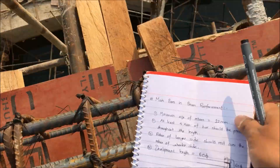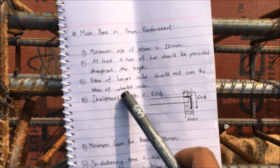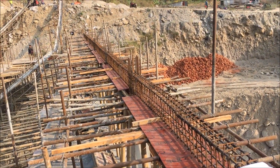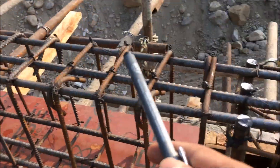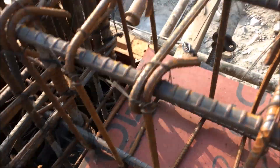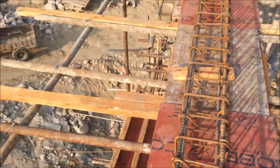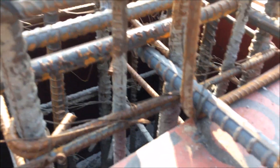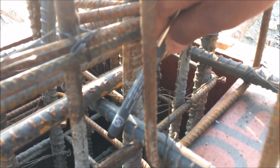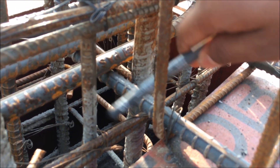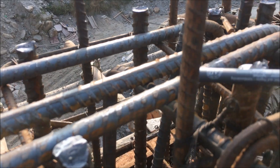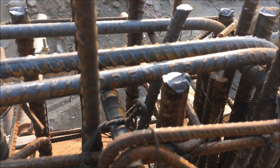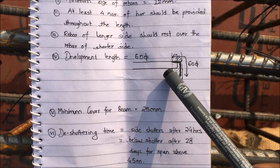The third point is that the rebar of the longer side should rest over the rebar of the shorter side. This is the longer side of the structure — the rebar of the longer side should rest over the rebar of the shorter side, as you can compare from the two sides. As you can see, the rebar of the longer side is resting over the rebar of the shorter side. This should be valid for both top reinforcement and bottom reinforcement — the longer side reinforcement should rest over the shorter side reinforcement respectively.